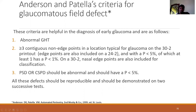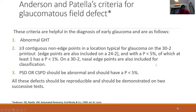The Anderson and Patella criteria are used to classify whether a field defect is significant for HFA. There are three criteria: an abnormal glaucoma hemifield test; in the total or pattern deviation plot, three contiguous abnormal points for 30-2 (or even adjacent points for 24-2) where the probability value is less than 5%, with at least one having a probability less than 1%; and the pattern standard deviation for SETA strategies (or corrected PSD) with a P value less than 5%. These criteria should be repeatable over two tests before the field is called abnormal.